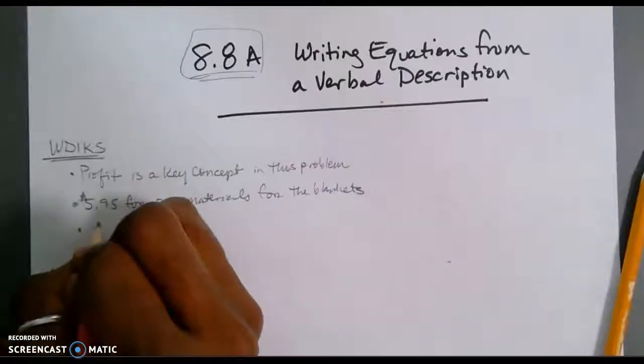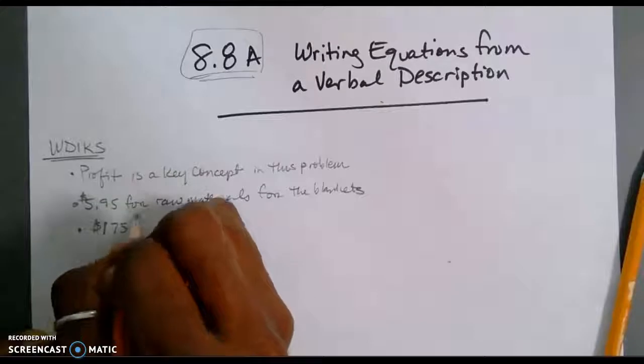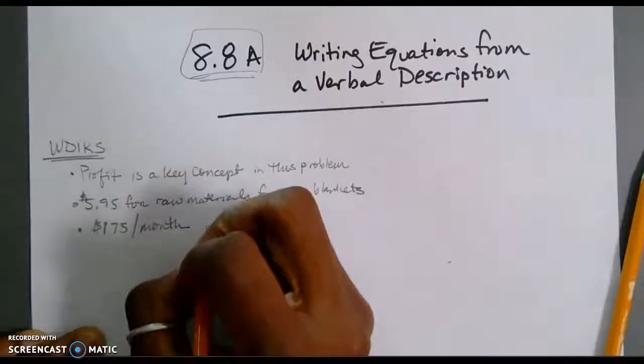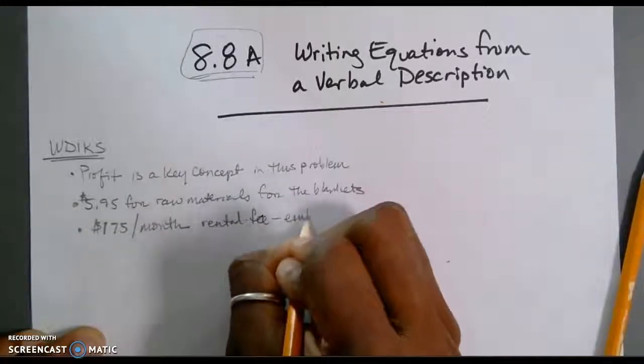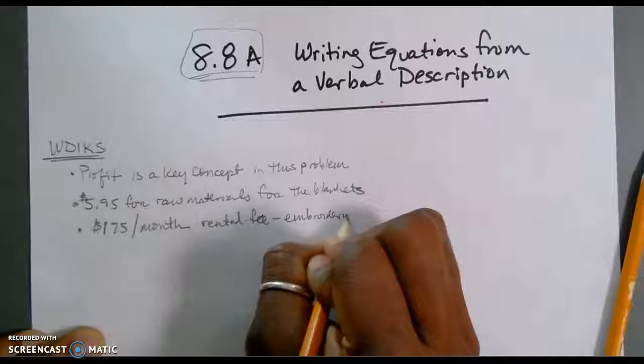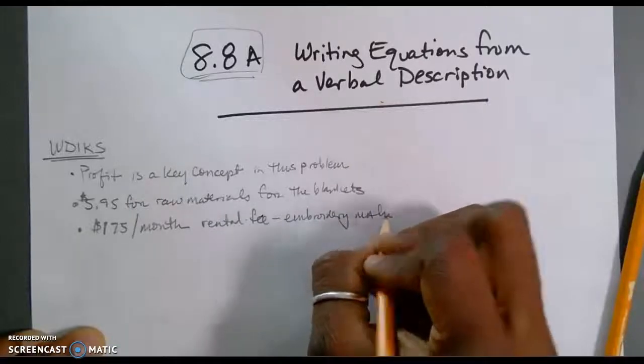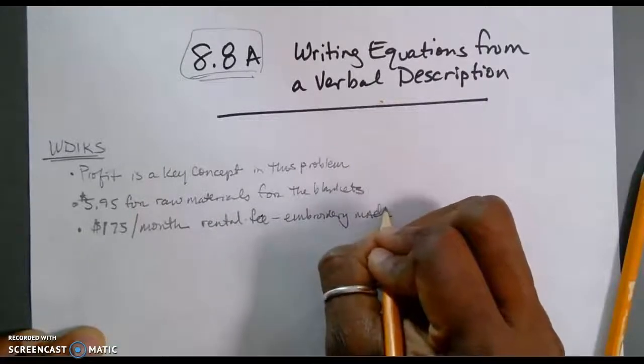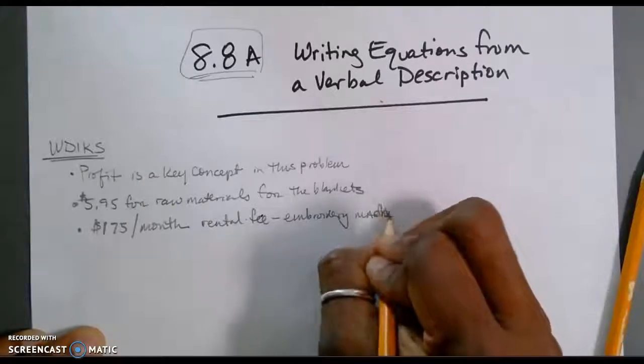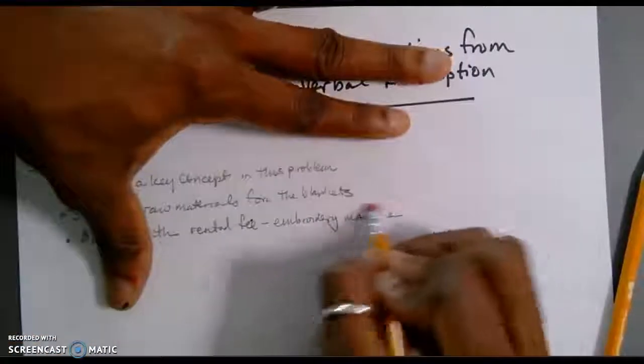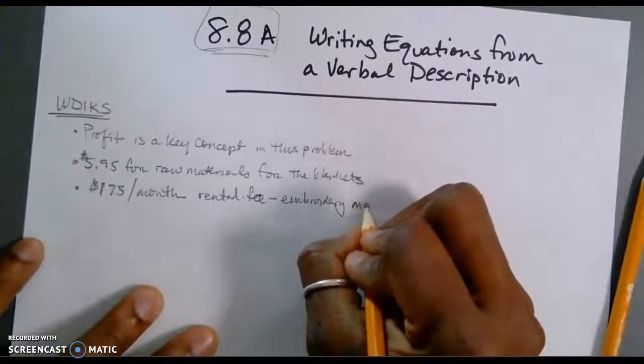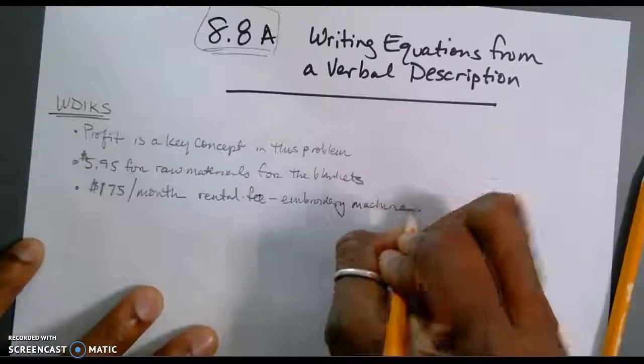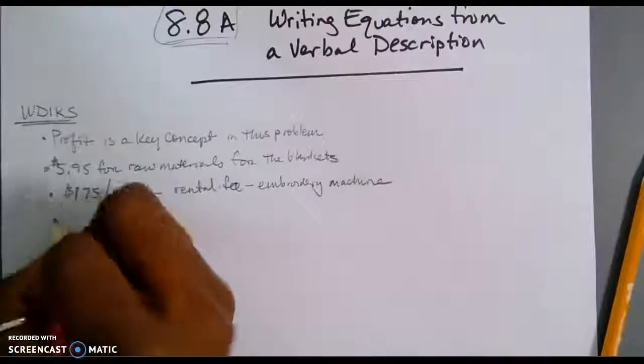We know that she is renting an embroidery machine per month at $175. That's for her machine. Did I misspell that? Yes, I did. C-H-I-N-E. Let's make that look a little bit better. Try it one more time. All right. I think that's better.